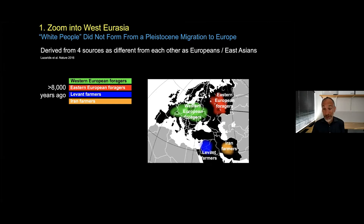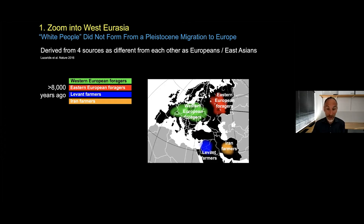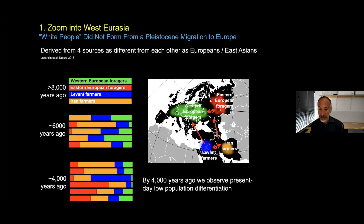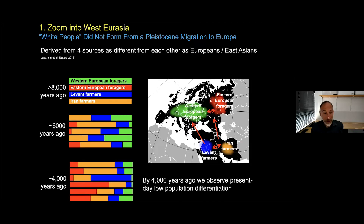If one were able to go back in a time machine and categorize people by their groupings, it would look nothing like today. These bars show proportions of ancestry from four sources. The question arises: which one is the primary ancestry of people living today, and how did relative homogeneity emerge from extreme heterogeneity? The answer is that none of these groups disappeared — they just mixed with each other to produce the very low level of differentiation we observe today. This phenomenon of 'white people' — a relatively low degree of genetic differentiation — is just a product of profound mixture that happened in the Copper Age and Bronze Age of groups that were much more differentiated before. This is increasingly seen as we get ancient DNA data from Africa, South Asia, the Americas, and many other places.